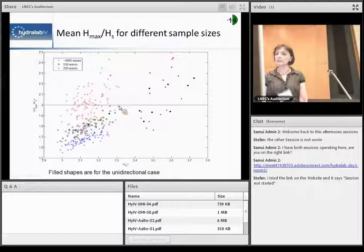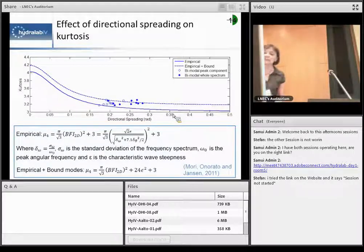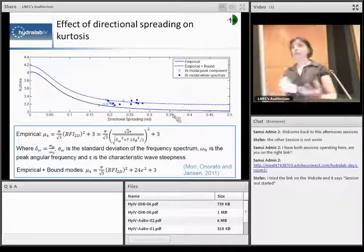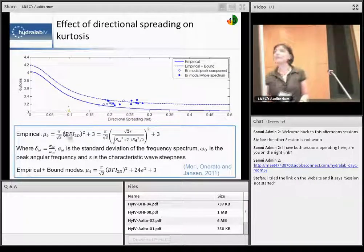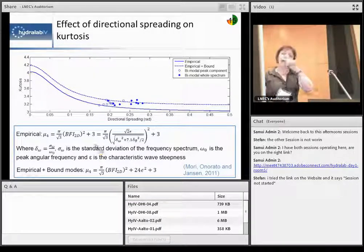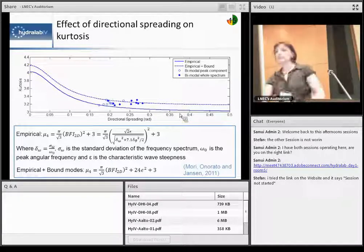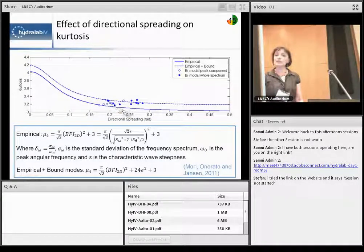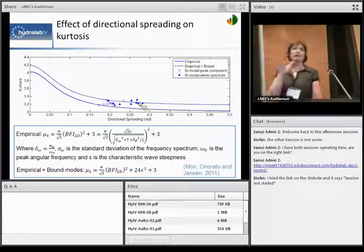In 2011, Mori, Onorato and Janssen actually developed the expression for kurtosis taking in account now not just the steepness and frequency bandwidth but also directional bandwidth in something what is called effective Benjamin Feir index. And so we brought it here now is that expression in blue and including bound waves in those kind of dashed lines. Our data in dots and versus directional spread. Now, see we have two different sets here.